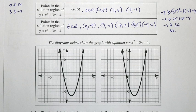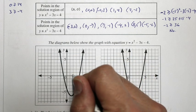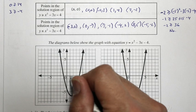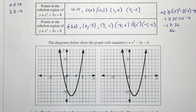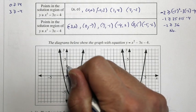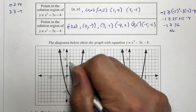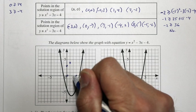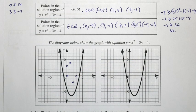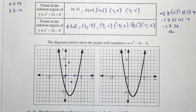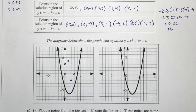These points are in the solution region of y is greater than or equal to x squared minus 3x minus 4. So here we have (3, 0), (0, 0), (0, 3), (1, 4), and (2, negative 2) plotted on the first grid. You'll notice something special about that arrangement.